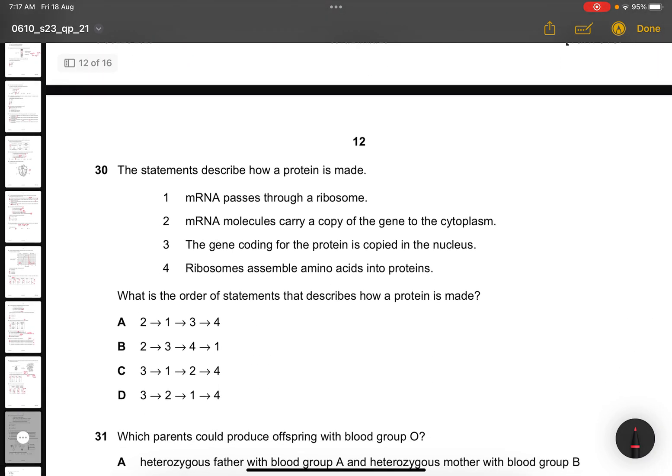Question 30. The statements describe how protein is made, protein synthesis again. First thing, the gene coding for the protein is copied in the nucleus. Then the mRNA will carry it to the cytoplasm. Then it moves through to the ribosome, passes through the ribosome. Then only it reaches here. So the answer is D.